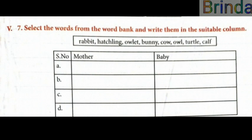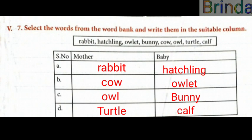Fifth, question seven: Select the words from the word bank and write them in the suitable column — Adult or Baby. The words are: rabbit, hatchling, owlet, bunny, cow, owl, turtle, calf. Hatchling is a baby. Owlet is a baby. Bunny is a baby. Calf is a baby. Rabbit is an adult. Cow is an adult. Owl is an adult. Turtle is an adult.